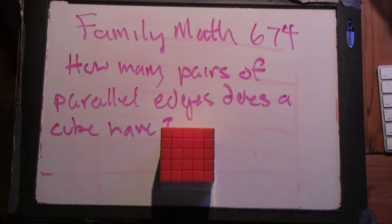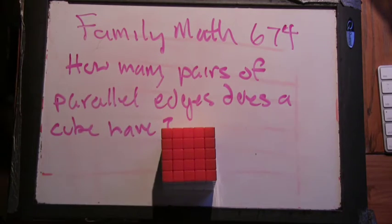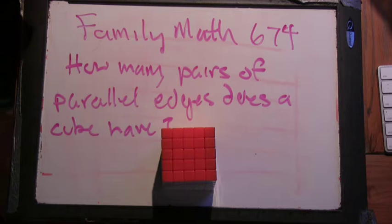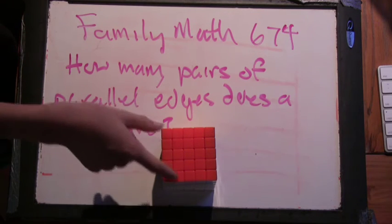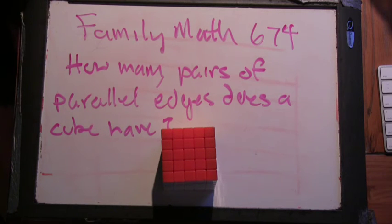I want to figure out how many there are. Well, we could figure out how many there are for one specific parallel edge, and then we could do that for all the other edges. And then we could divide for the over-counting. Okay, great.